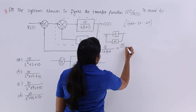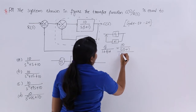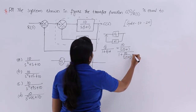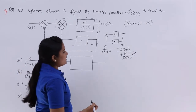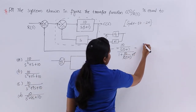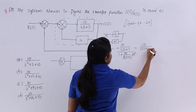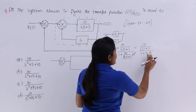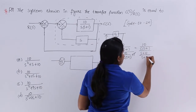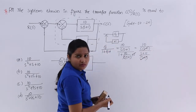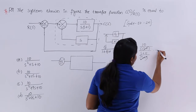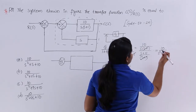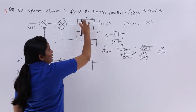Substituting: we get [10/(S(S+1))] divided by [1 + (10/(S(S+1)))·S]. The S terms cancel, and after cross multiplication we get 10/(S²+11S). So the reduced block for the inner feedback loop is 10 divided by S squared plus 11S. This is G/(1+GH) applied to the inner feedback.